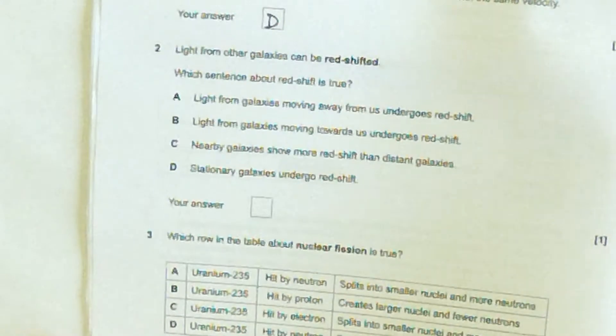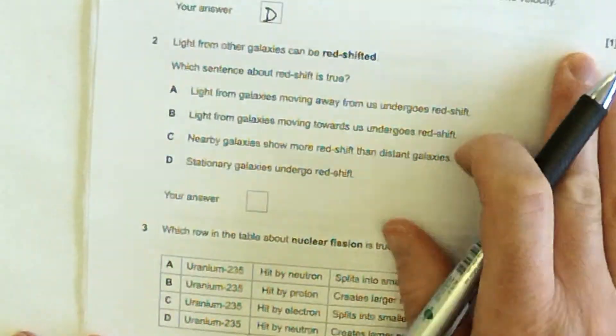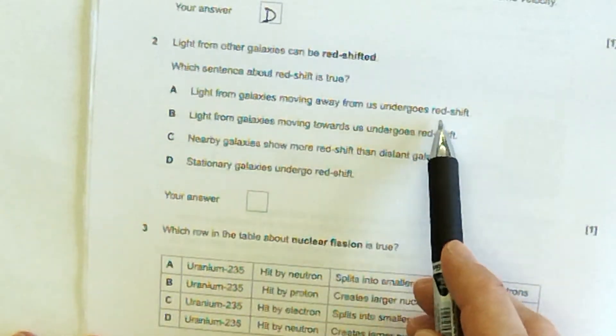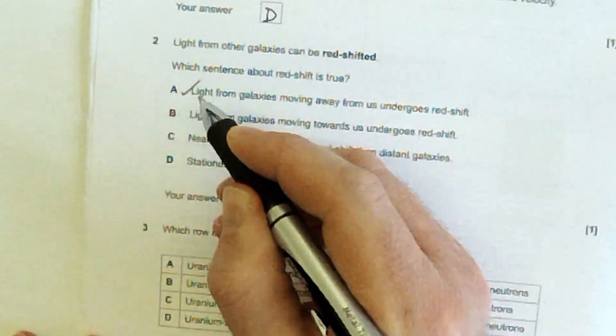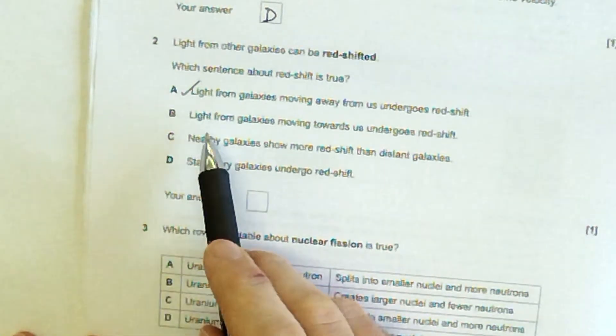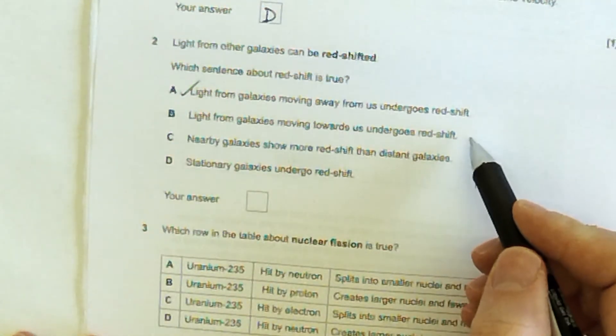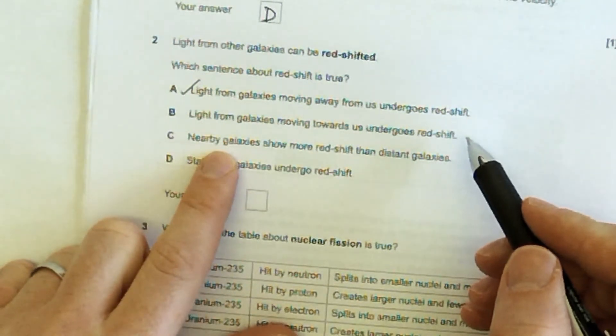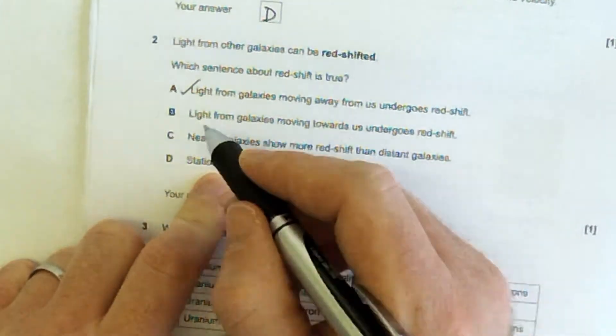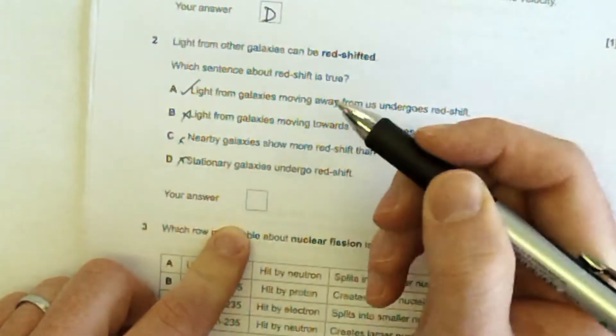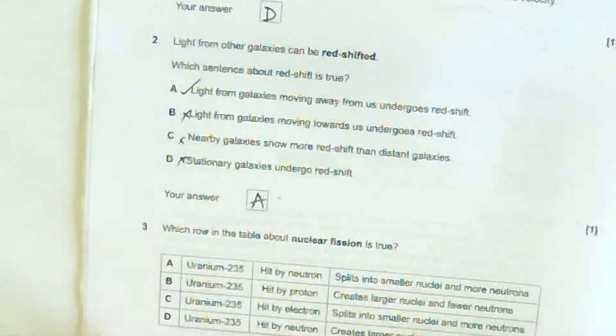Light from other galaxies can be redshifted. What sentence about redshift is true? Light from galaxies moving away from us undergoes redshift. Yeah, that does make sense to me. I'll check the other one in case there's a more correct one. Light from galaxies moving towards us undergoes redshift. Blue shift. Wavelength getting shorter, it's blue shift. Nearby galaxies show more redshift than distant galaxies. That's not correct. The distant ones show more redshift. Stationary galaxies don't change their colour, so that's that one there.